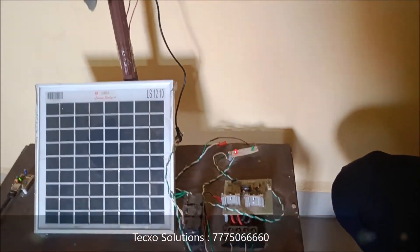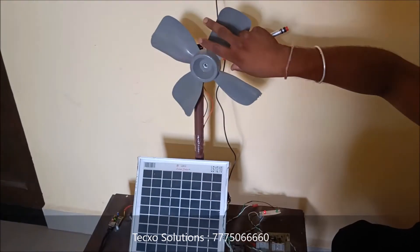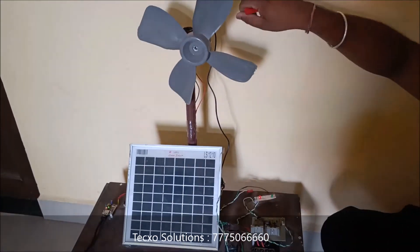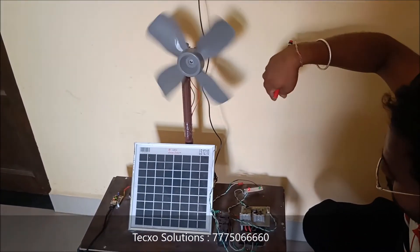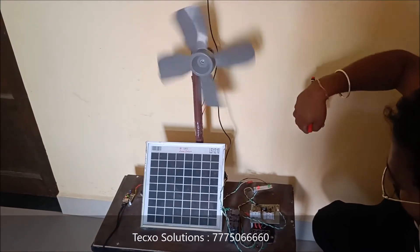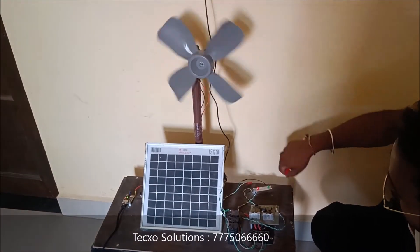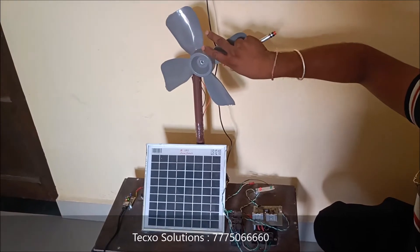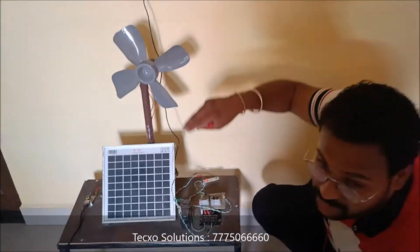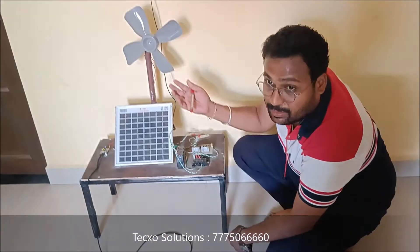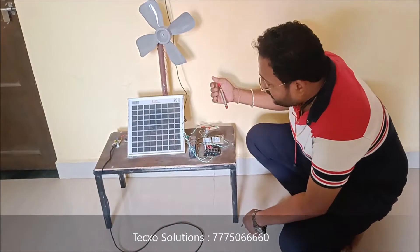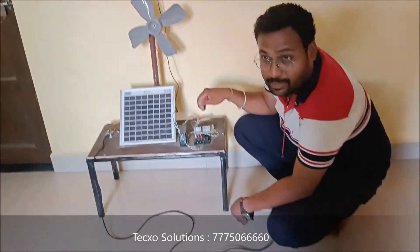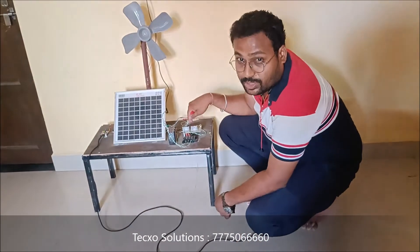Whenever wind strikes the turbine, the generator starts rotating — like this. So as you can see, it is a continuous process. We need the turbine to keep rotating so the generator rotates, and all the energy from both sources is stored into the battery via the solar charge controller.